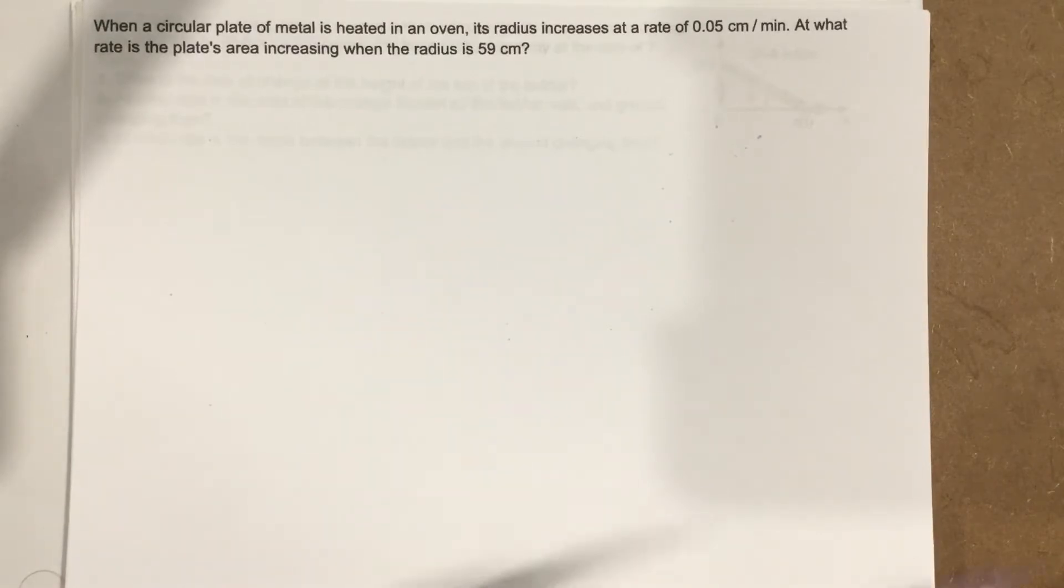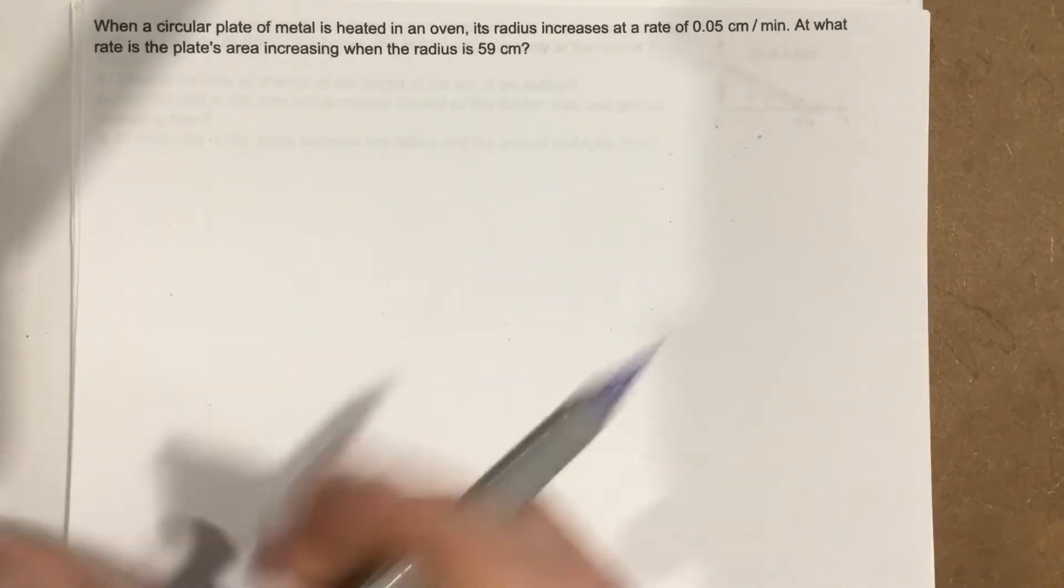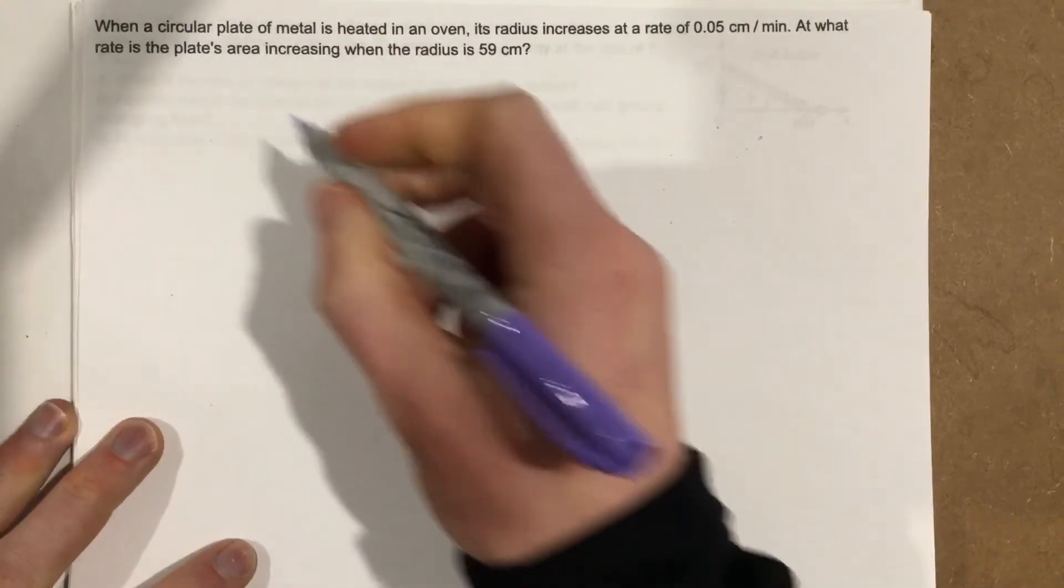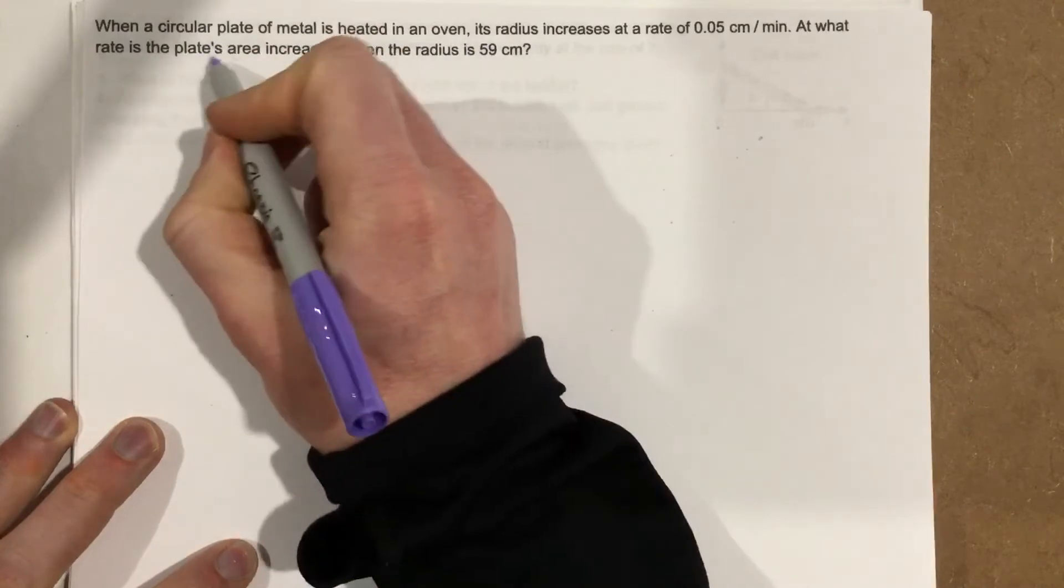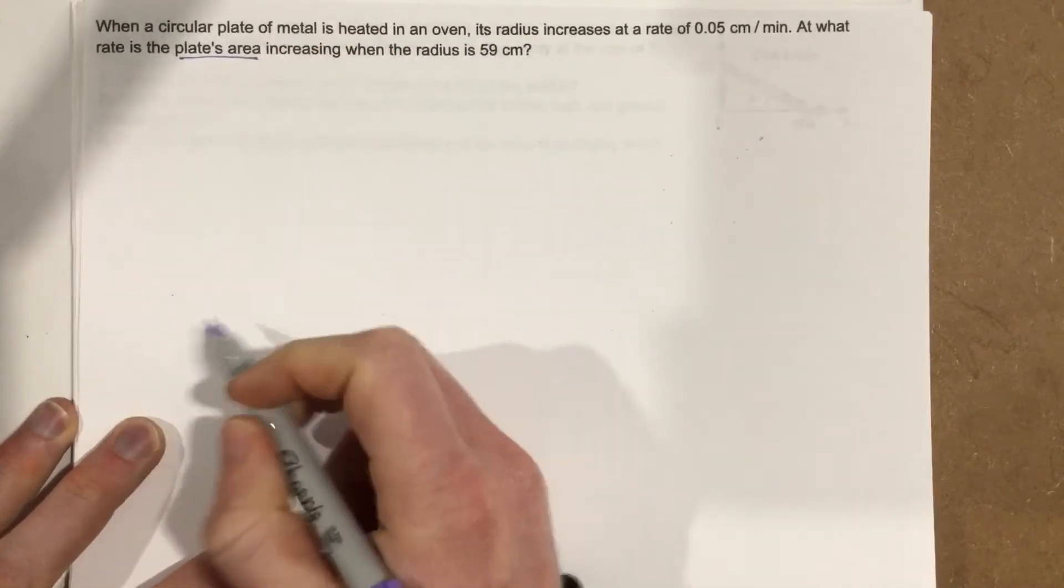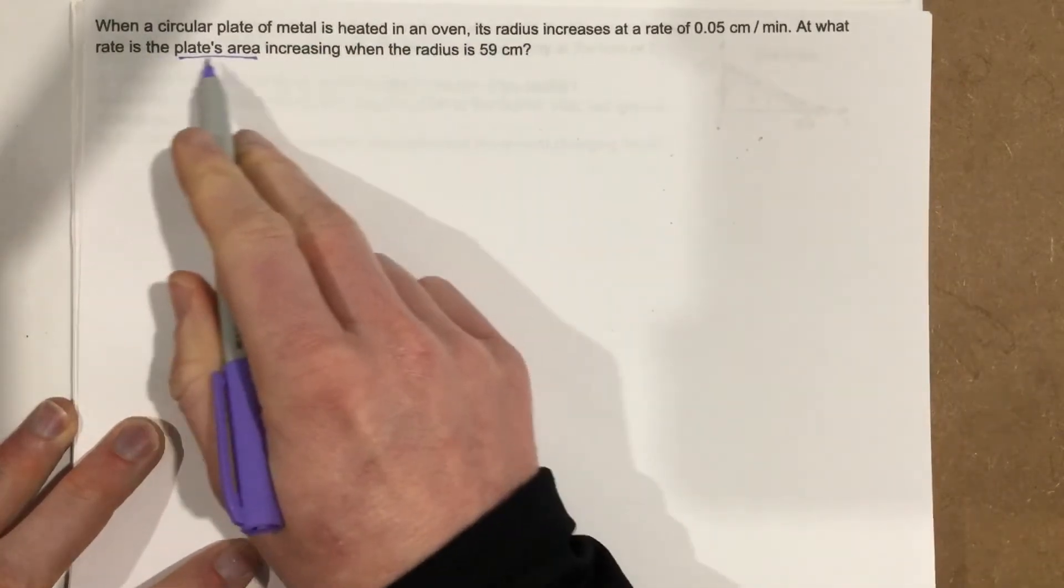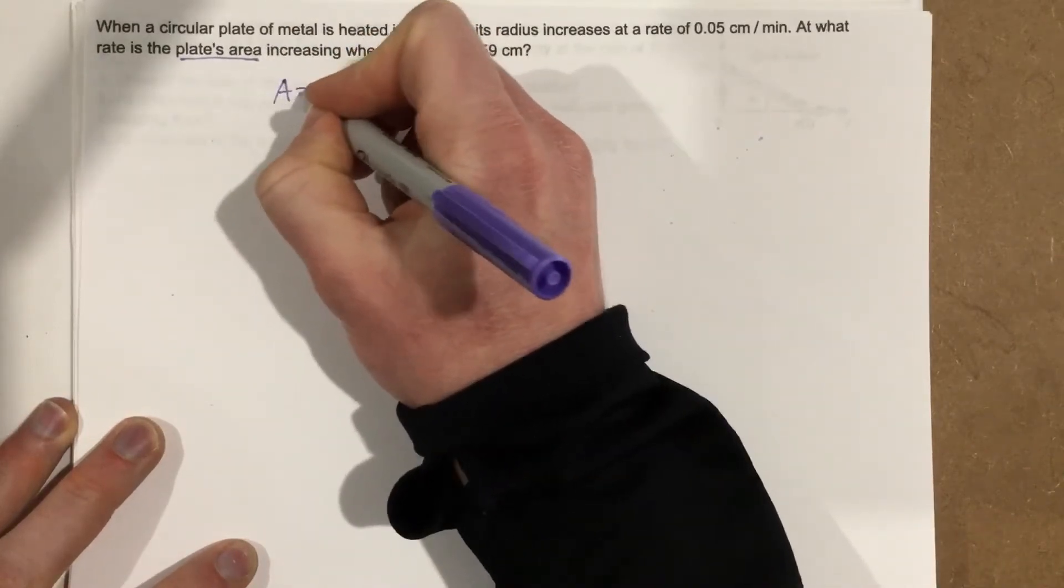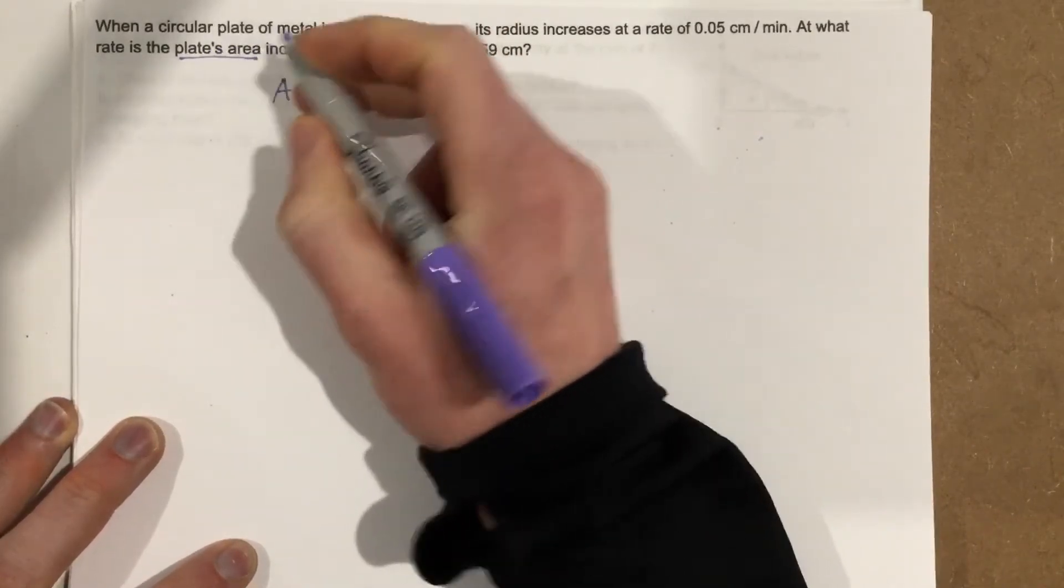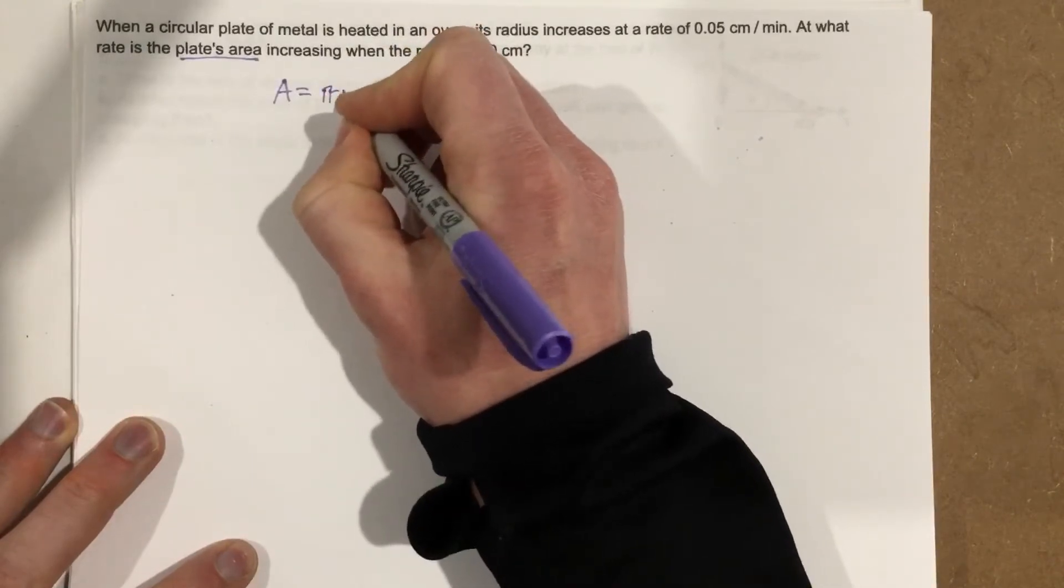So when a circular plate of metal is heated in an oven, they're talking about a circle. Let's write the things we know about a circle. They specifically say the plate's area, and at what rate is the plate's area increasing? So let's write the area equation. We know area equals, for a circular plate, that's going to be pi r squared.